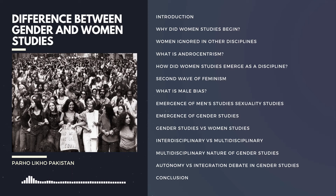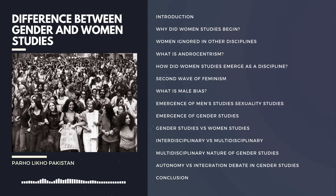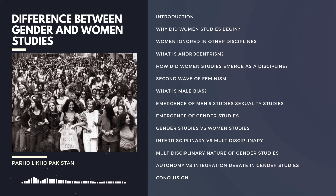The question is: how did women's studies originate as a discipline? What were the conditions that led to the development of this academic discipline? Well, till the late 1960s, various disciplines like the social sciences and sociology did not acknowledge women as an important gender. They completely ignored the interests of women, the experiences of women, their contributions, their issues, even their identity.